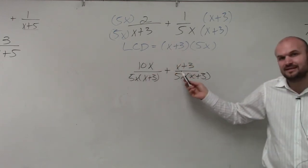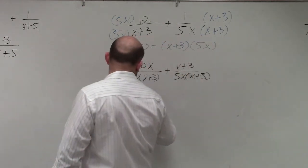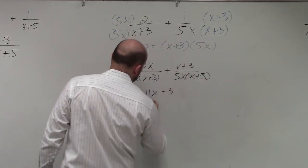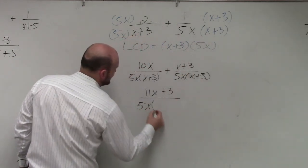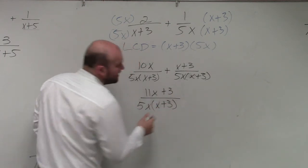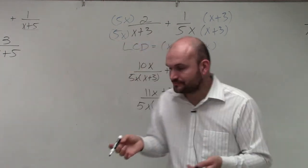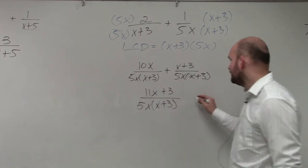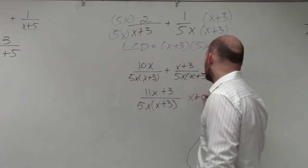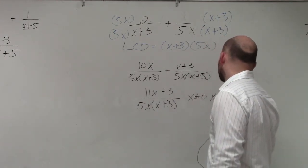And I can combine a 10x and an x. So therefore, I end up with 11x plus 3 divided by 5x times x plus 3. And again, I like using this factored form because now I know that x cannot equal 0 and x cannot equal negative 3.